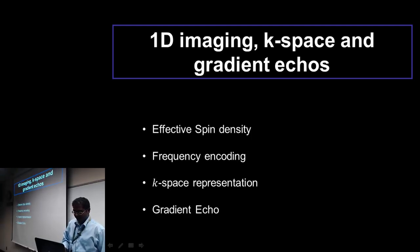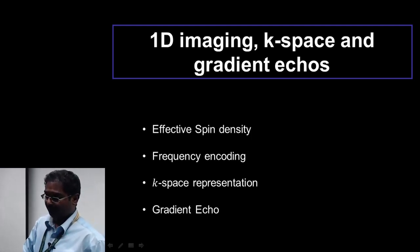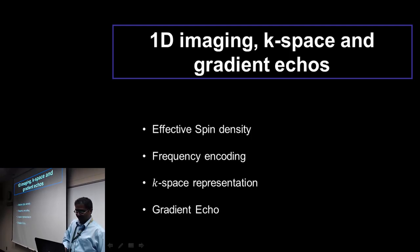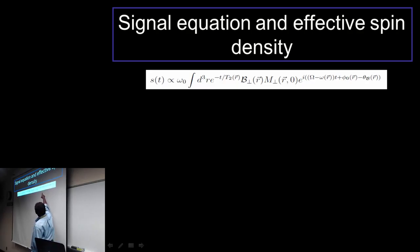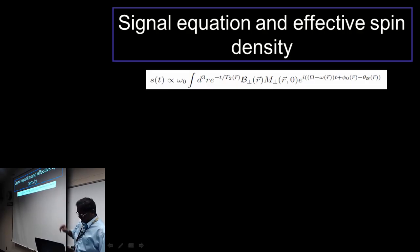Coming to today's class, the key points we will cover include introducing new terminology like frequency encoding and k-space. We will be understanding one of the key approaches to imaging, which is the gradient echo, and that is essentially what is behind most of the imaging that we do.